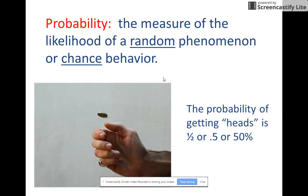So now let's talk about probability. Probability is the measure of the likelihood of a random phenomenon or chance behavior. So what's the probability of getting heads when you flip a coin? Well, it would be one out of two chances or 0.5 or 50%. That's assuming that it's a fair coin and being randomly flipped.